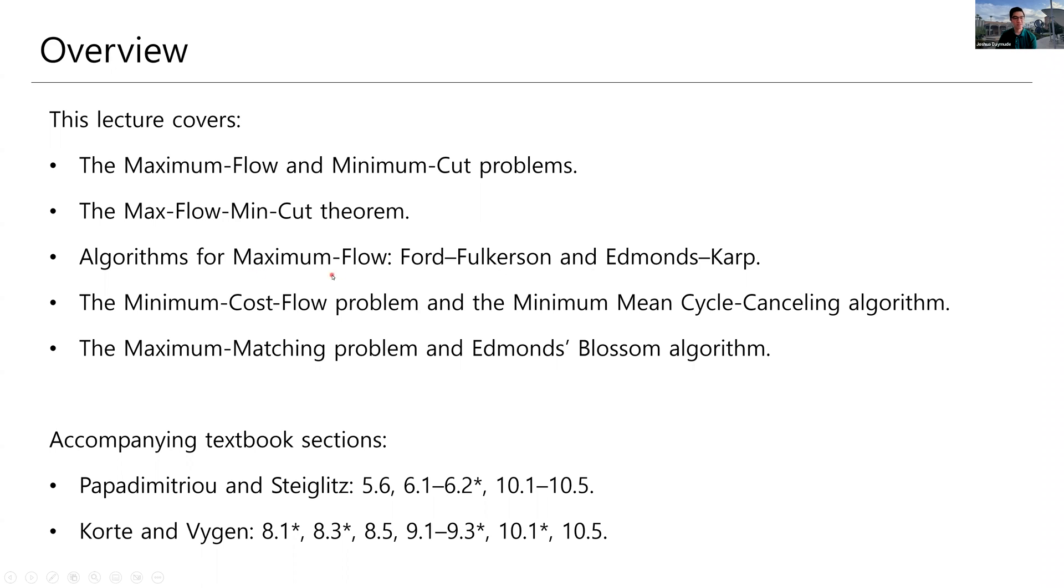That will conclude our discussion of max flow, and we will then shift to a more general problem, the minimum cost flow problem. Here, once again, we'll define the problem. We will define an optimality criteria, so we'll do some theory to figure out when we have a minimum cost flow. And then we'll use that optimality criteria, that theory, to yield this minimum mean cycle canceling algorithm.